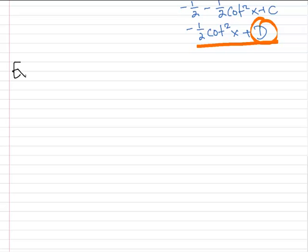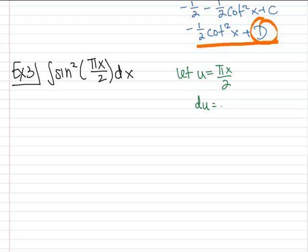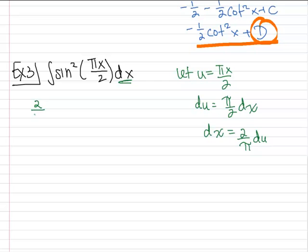Let's try: integral of sine squared(πx/2) dx. Let u equal πx/2, so du equals π/2 dx, and dx equals 2/π du. Substituting, we get 2/π times the integral of sine squared u du. To integrate sine squared, we need the double angle formula for cosine.